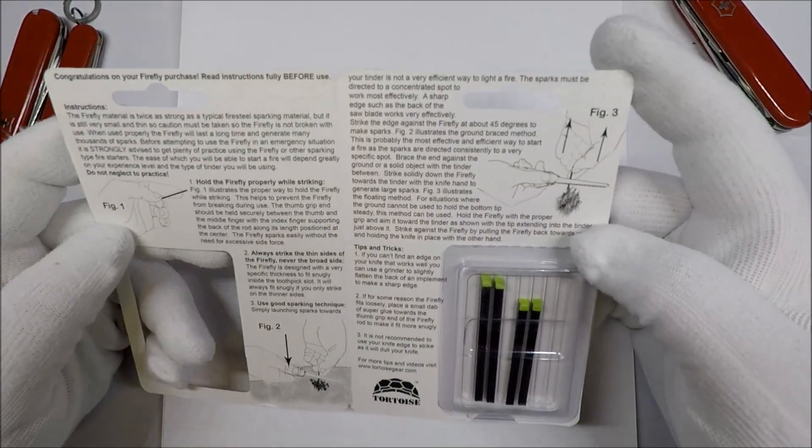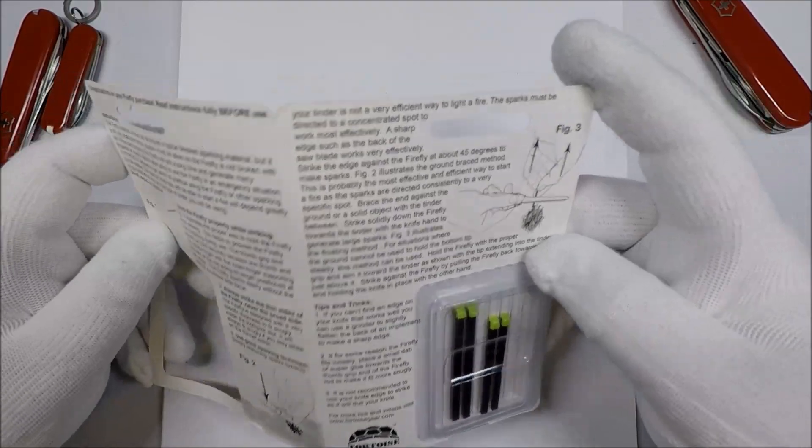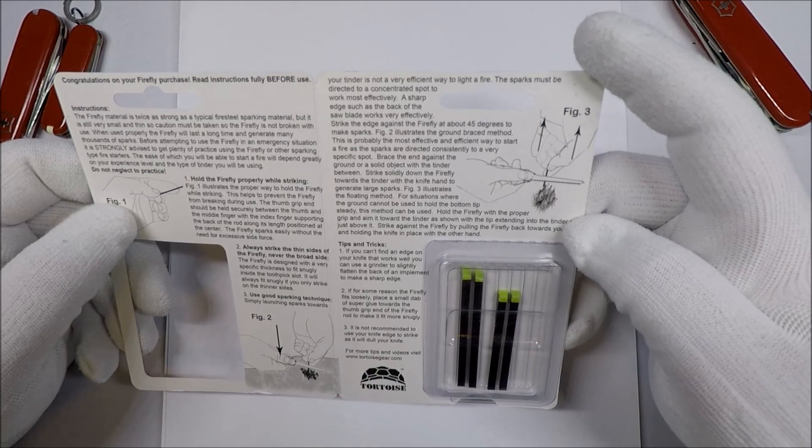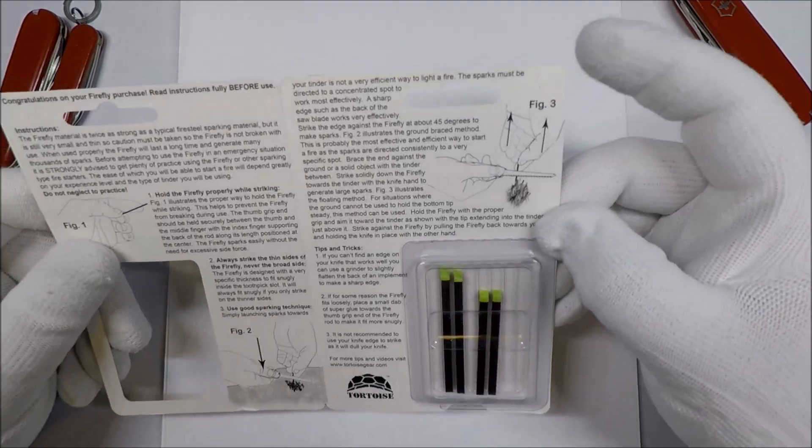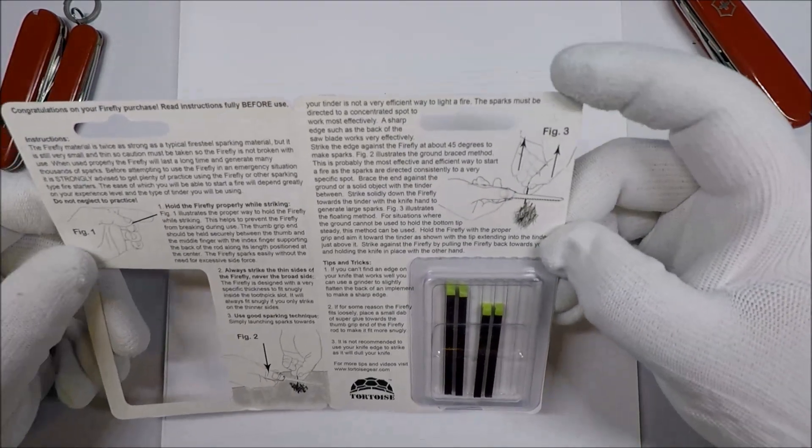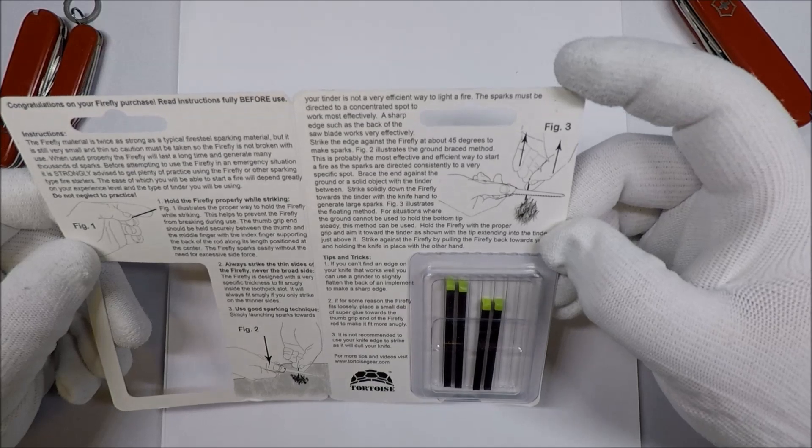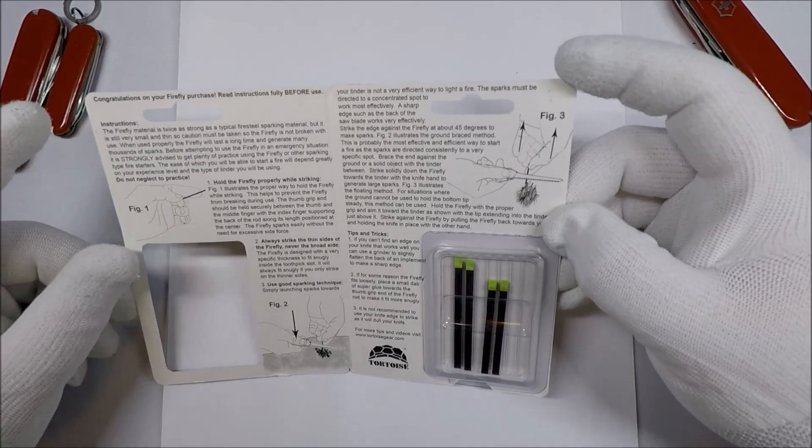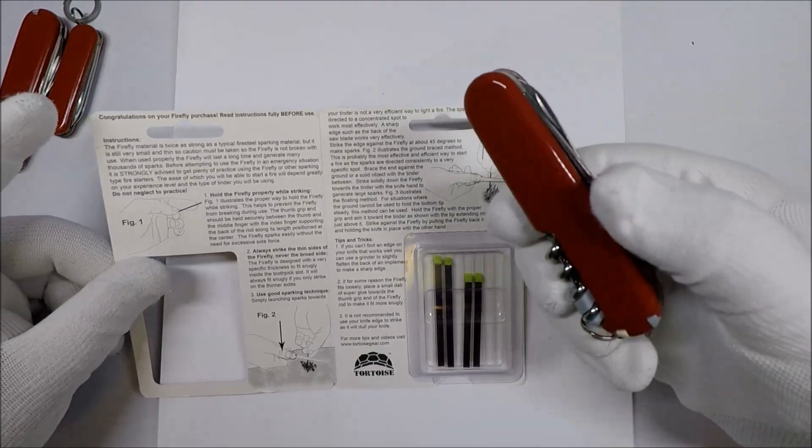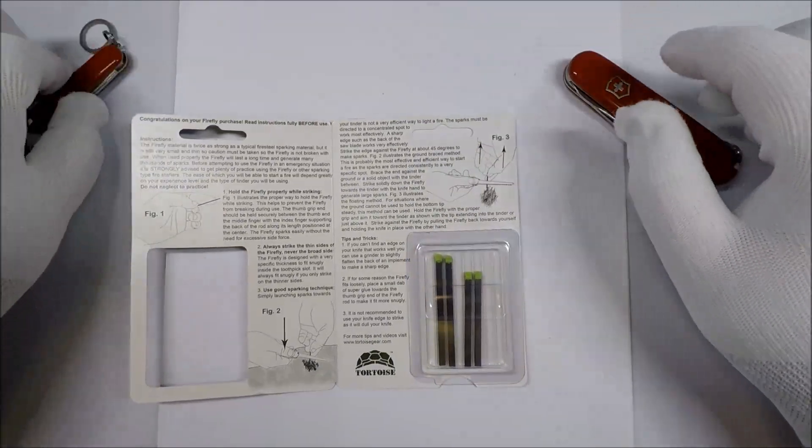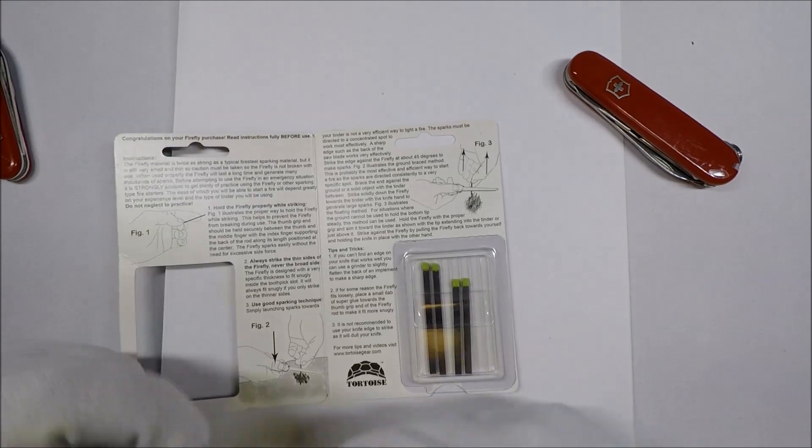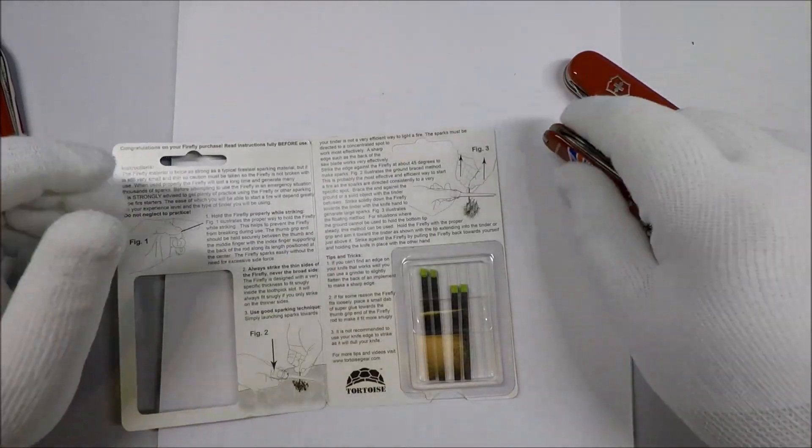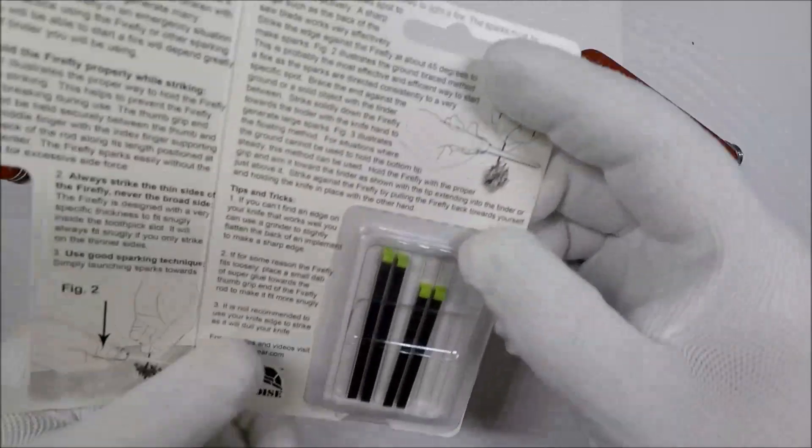It gives us instructions on how to do it. It's suggesting I use the back of the saw, which means I have to grab a knife that has a saw on it. I've got a compact and a classic here, so we'll test out the fit of these and then see how the sparking thing goes.